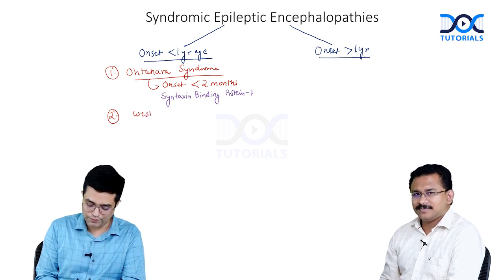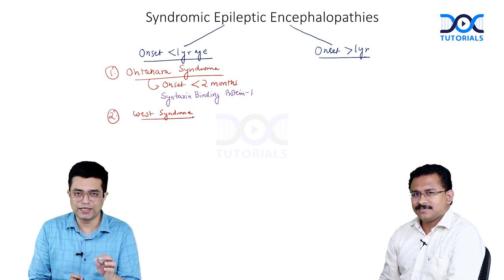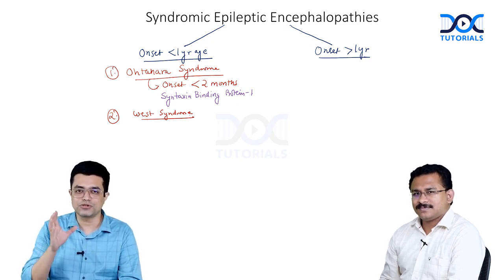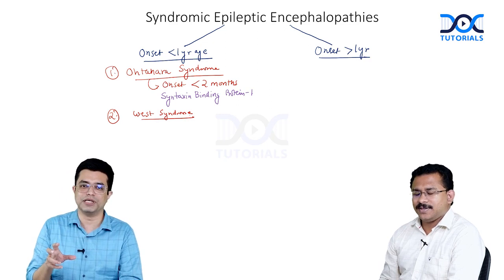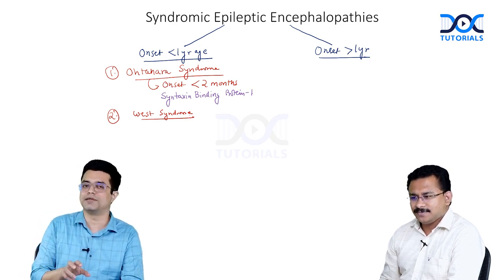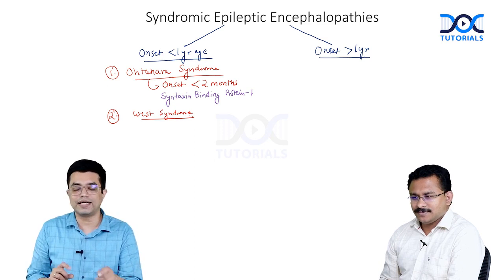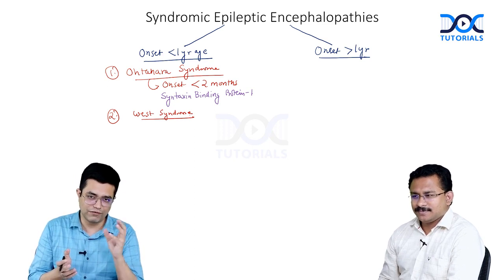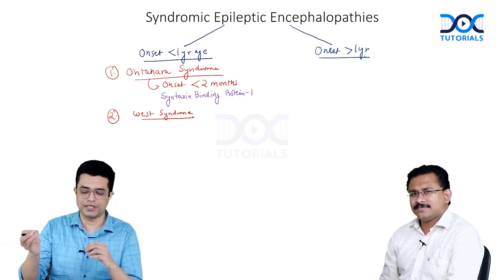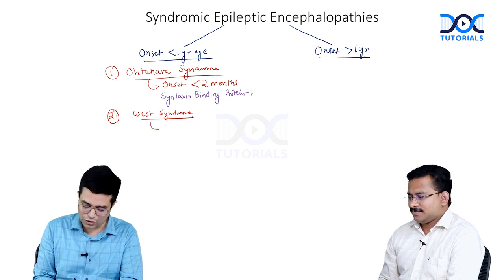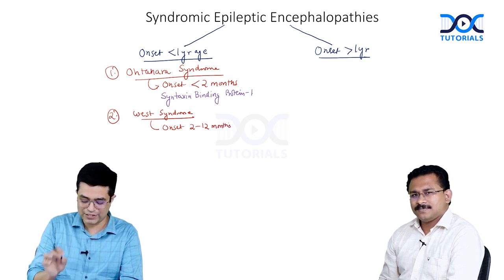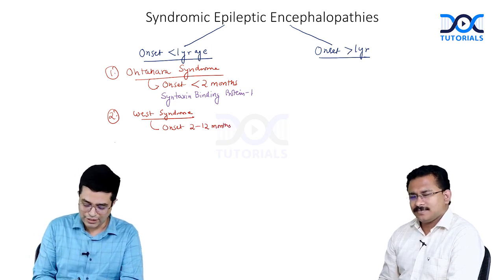The second syndrome is West syndrome, sometimes synonymously used with infantile spasm. Technically, West syndrome is diagnosed when there are clinical epileptic infantile spasms associated with EEG evidence of hypsarrhythmia — typical or variant. Although developmental delay is often present, it is not essential for the diagnosis. The time of onset of infantile spasm is between 2 to 12 months; it always manifests in the first 12 months of life.